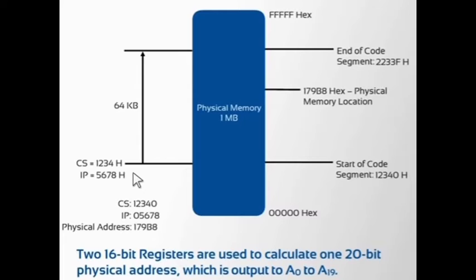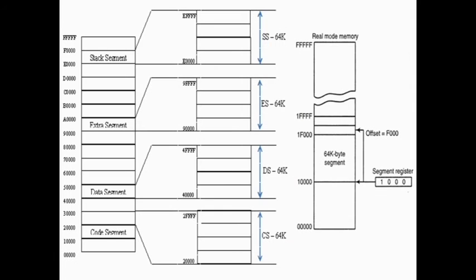Code segment: the code segment points to the code within the memory space. If you just change the value in the segment register, you could switch across the complete 1 MB of memory. The data segment register is at the bottom, the code segment register at the top, and the extra segment and stack segment registers are in the middle.